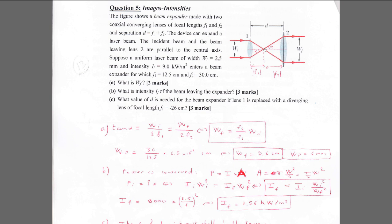If you follow one ray parallel to the central axis, it will intersect the focal point of the first lens. Because this also coincides with the focal point of the second lens, the ray will emerge parallel to the central axis on the other side. The same story applies to other rays.